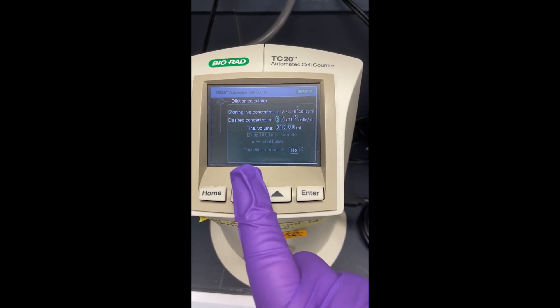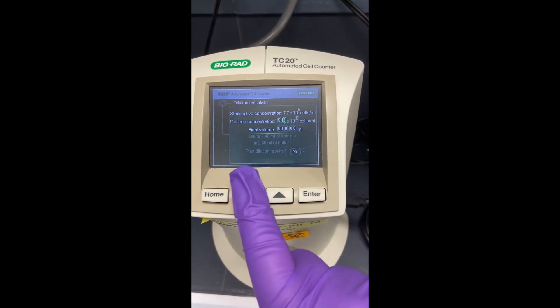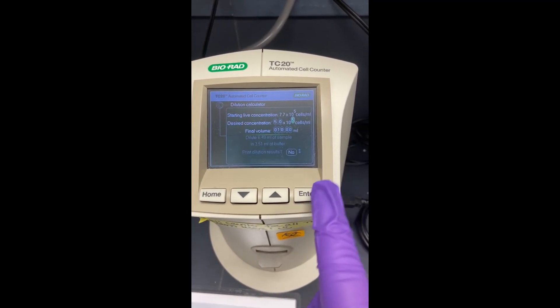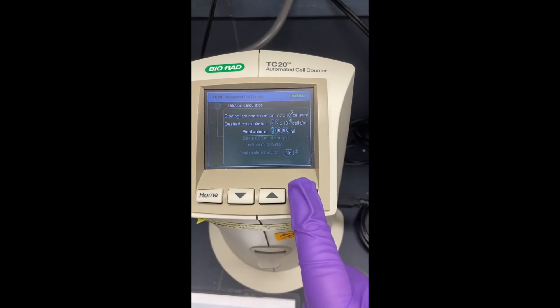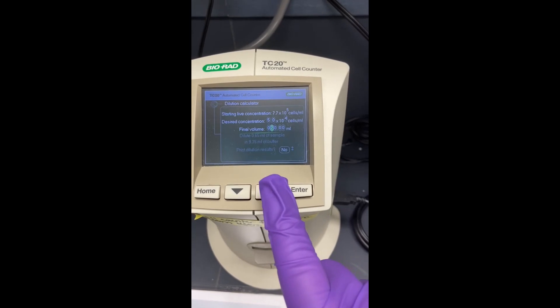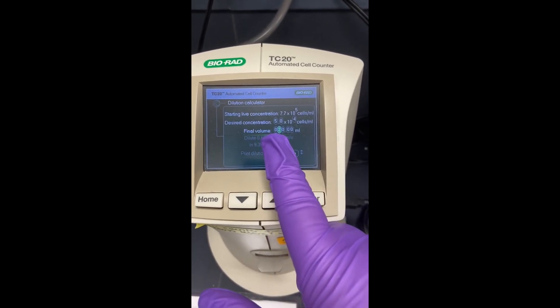And so for this experiment that I'm planning on doing, I need 5×10^4 cells. So it's a little push button where you have to push enter and then up and down. But you can tell it your final dilution and your final volume.